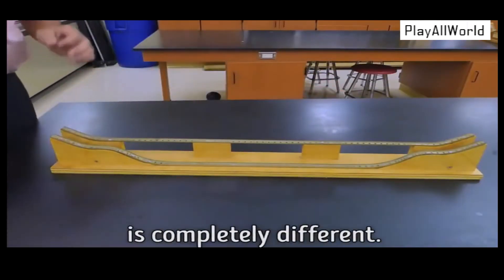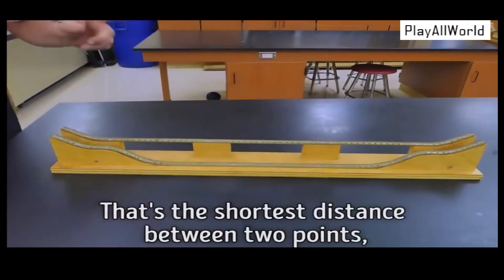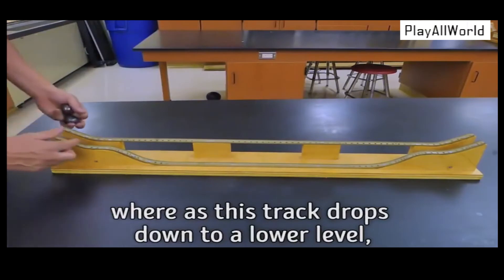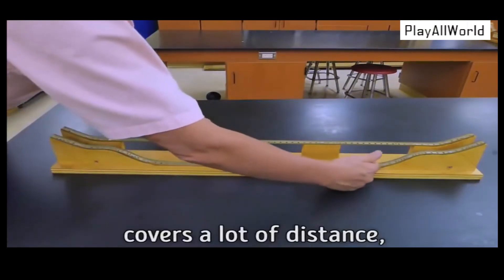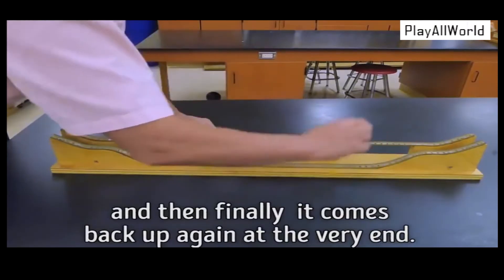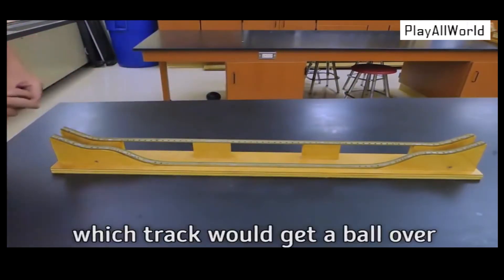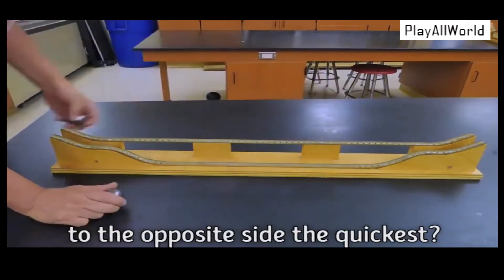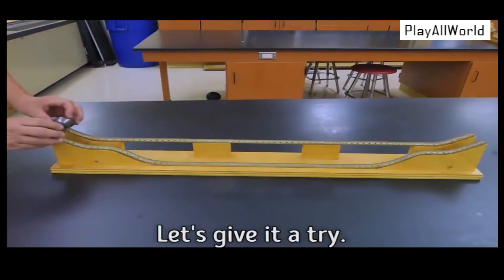but the path from one side to the other is completely different. This one is a straight path, it's the shortest distance between two points, whereas this track drops down to a lower level, covers a lot of distance, and then finally comes back up again at the very end. So the question is, which track would get a ball over to the opposite side the quickest? Well, I have two steel balls here. Let's give it a try.